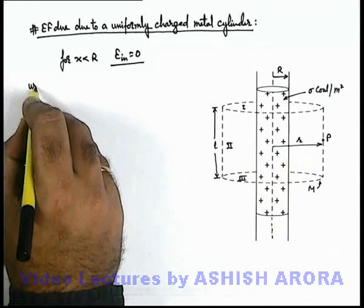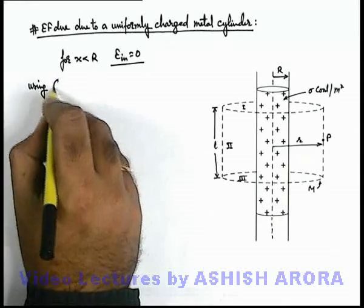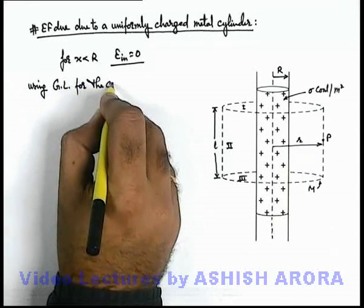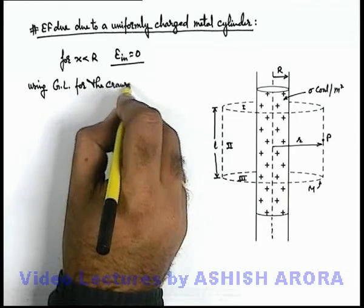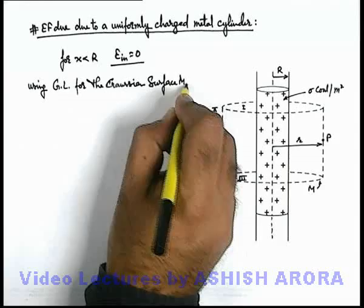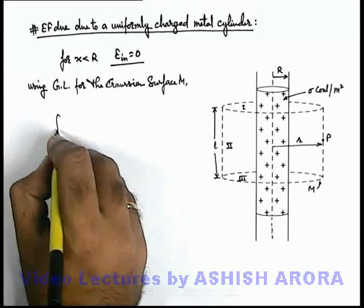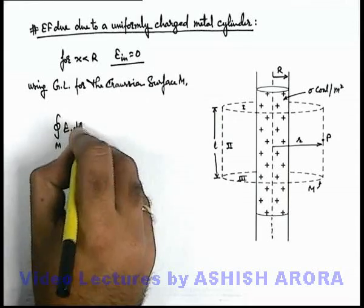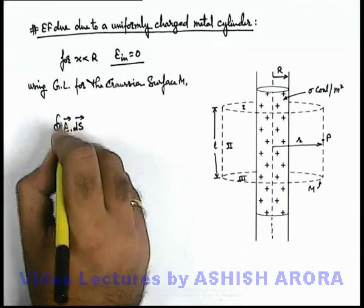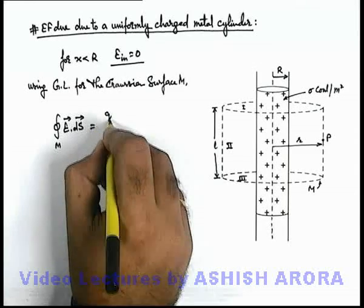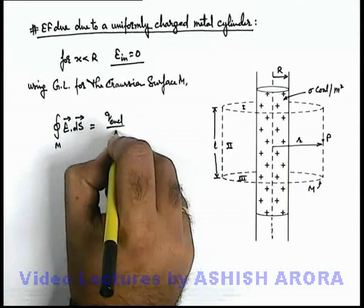Now we can write using Gauss law for the Gaussian surface: the total flux for the closed surface is given as integration of E dot dS, and this must be equal to the enclosed charge by epsilon not.